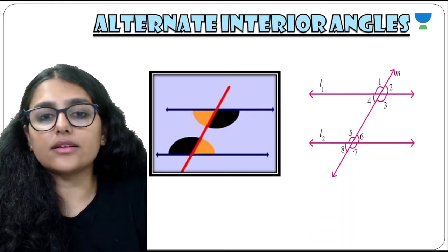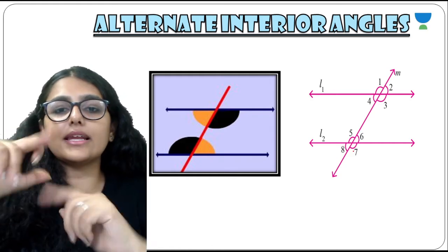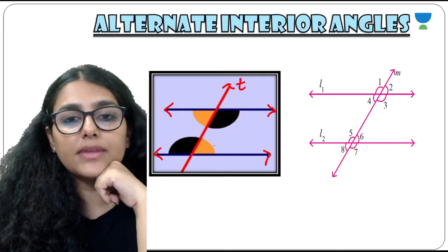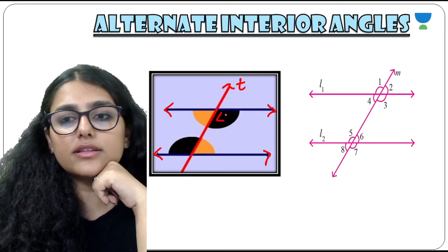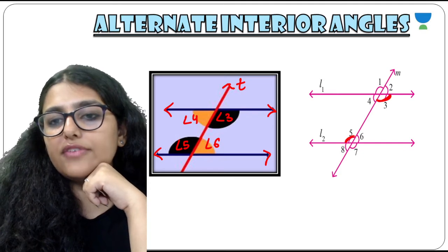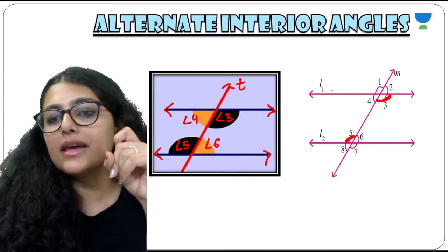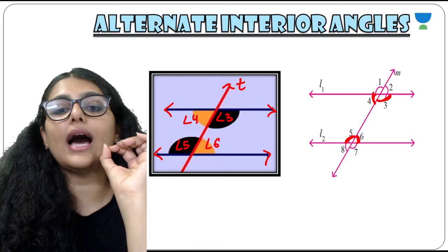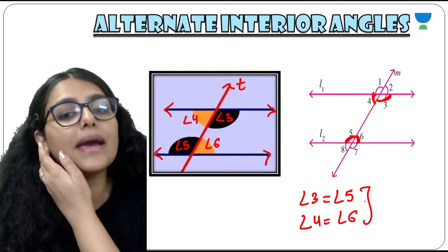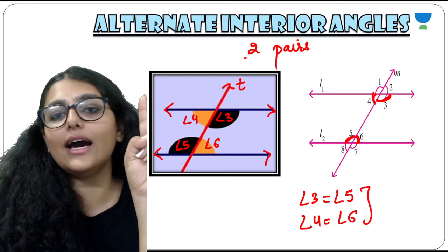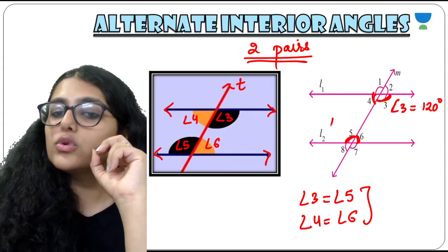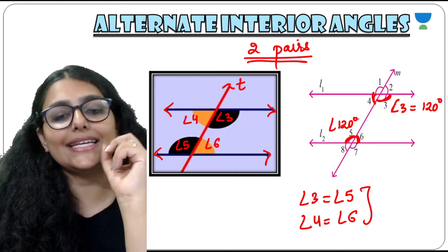Second: alternate interior angles. Interior means they lie between both the parallel lines, not exterior. In the diagram with transversal T, angle 3 equals angle 5, and angle 4 equals angle 6 — these are alternate interior angles. They are equal to each other. Two pairs of alternate interior angles are formed, and they are equal. So if angle 3 is given as 120 degrees, angle 5 will automatically also be 120 degrees because they are alternate interior angles.